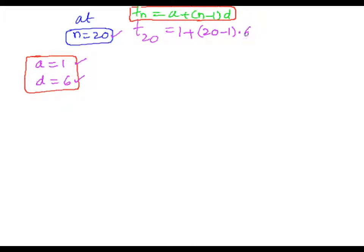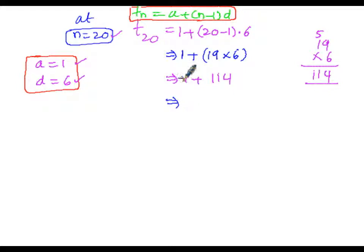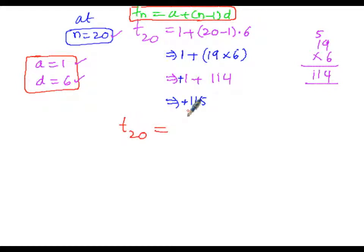That implies t(20) = 1 + 19 × 6 = 1 + 114 = 115. So the 20th term of the arithmetic progression is 115.